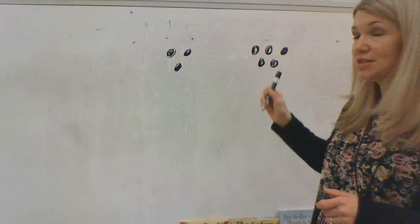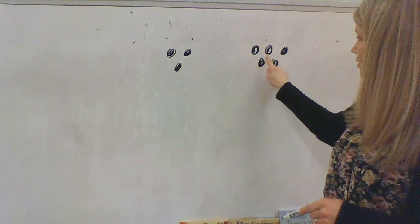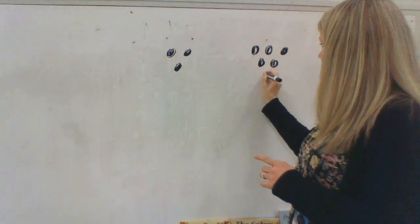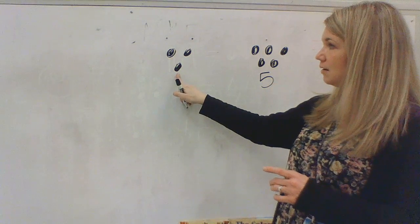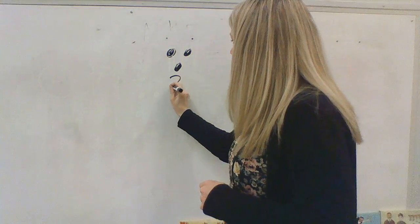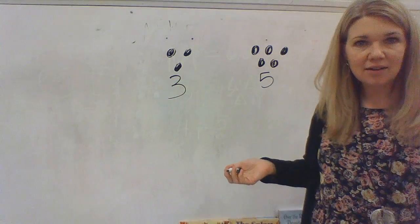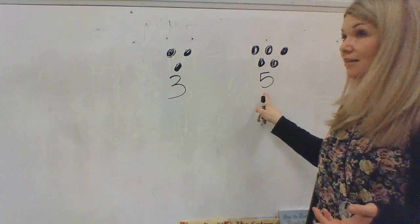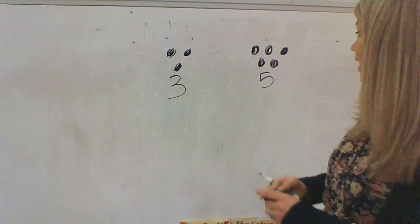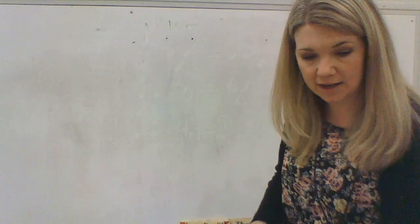This one. That's right. How many are in there? Can you count them? One, two, three, four, five. How many are here? One, two, three. Three — which number is bigger or greater? Five. That's right. There are more in five, so five is the bigger number. It is greater.